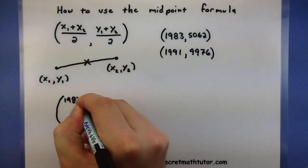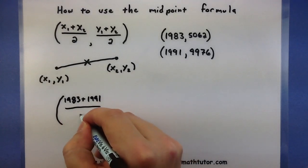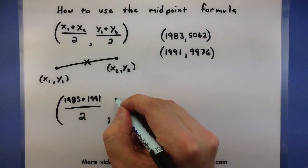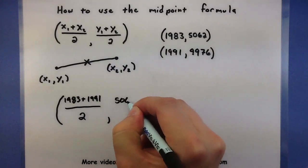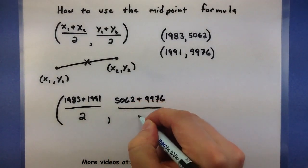So, 1983 plus 1991. We're going to take that and divide it by 2. Now, we'll also do the same thing with the y values. So, 5062 plus 9976, all divided by 2.